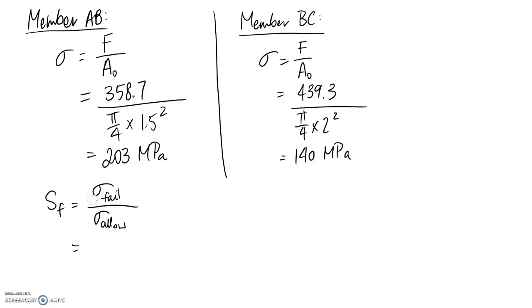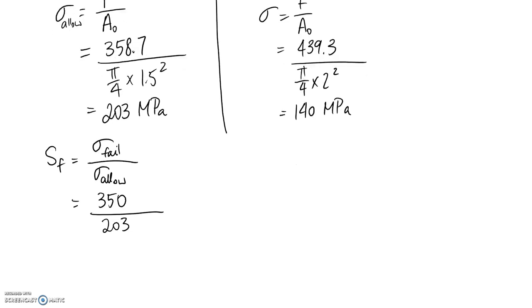So our failure stress we just said was 350 and the allowable or the design for this member is going to be this 203. Okay, it's the actual number that's going through your member. So working this out you end up with a safety factor of 1.72.